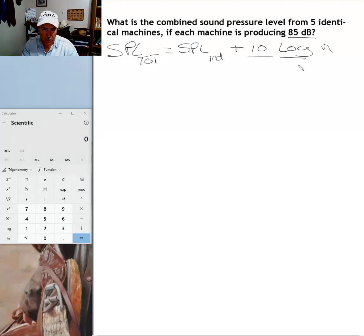Log is a mathematical function that we will use during the calculation. And n is the number of machines. We have five identical machines, so n equals five in this particular example.